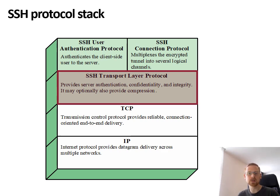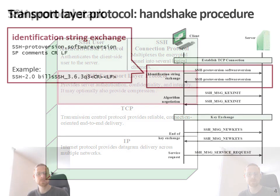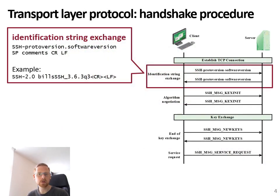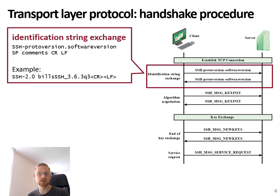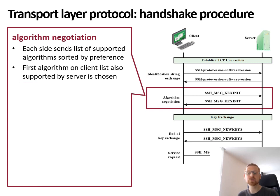Let's take a closer look at the SSH transport layer protocol. Before secure communication can occur, a handshake procedure is needed where the client and the server will negotiate which security algorithms to use, which version of SSH to use, and which security parameters such as keys to use. The first step of this handshake procedure is the exchange of an identification string, which mentions the software version as well as the SSH version being used. SSH supports a wide range of algorithms for confidentiality, message integrity, and compression, and during the handshake, which algorithms are used is negotiated.